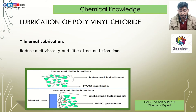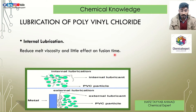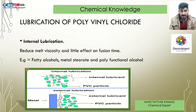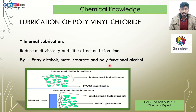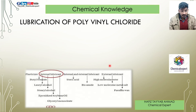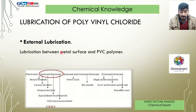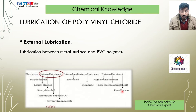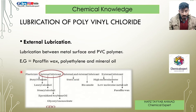Internal lubricants also reduce viscosity and affect fusion time. Examples of internal lubricants are fatty alcohols, metal stearates, and polyfunctional alcohols. External lubricants act between the metal surface and PVC polymers. You can note down the examples shown here — and here you can also see paraffin wax, polyethylene, and mineral oils listed as external lubricants.